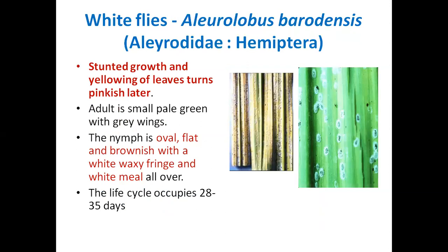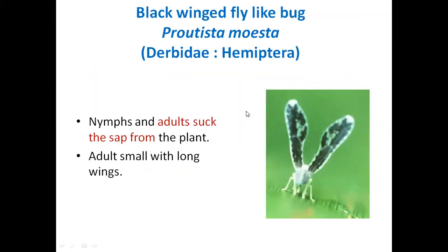Whitefly, Aleurolobus barodensis, is also present on the lower leaf surface like other sap-sucking insects. An important exam point is that nymphs are sedentary while adults are migratory and very active — if you touch the leaf, the adults fly away, whereas nymphs settle on the lower surface, continuously suck sap, and develop into adults. After draining the sap, you can find leaf drying. Next, the black-winged fly-like bug Proutista moesta, belonging to family Tetrabidae, order Hemiptera, also produces the same symptoms as other sap-sucking insects.